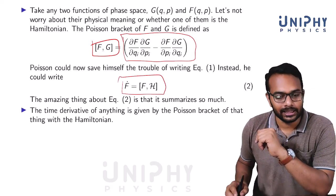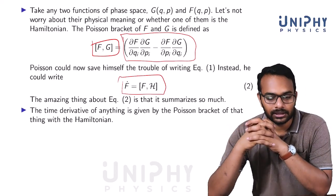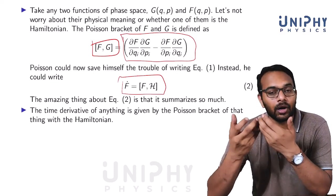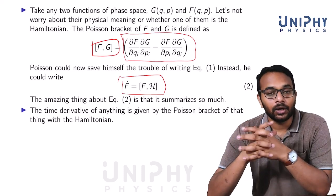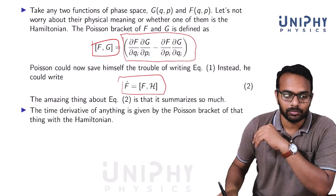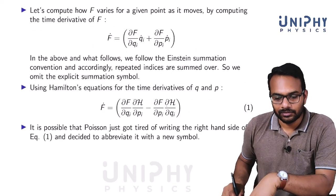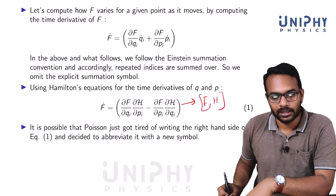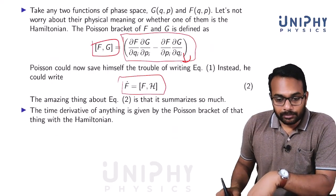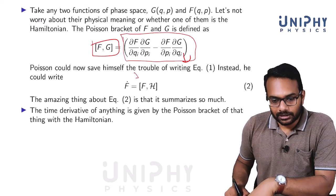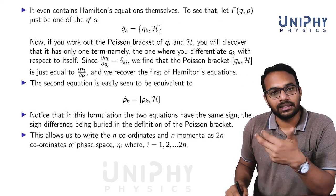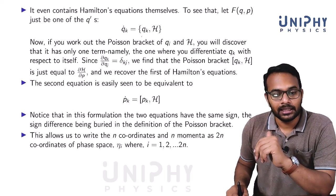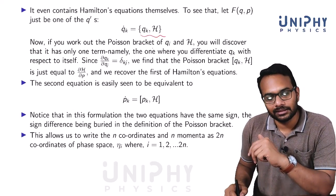With this definition, the complicated expression for f-dot becomes simple: f-dot equals the Poisson bracket of f with H. This says that the time derivative of any function associated with your physical system can be found by taking the Poisson bracket with the Hamiltonian. As a simple example, you can recover Hamilton's equations: q_k-dot is the Poisson bracket of q_k with H.